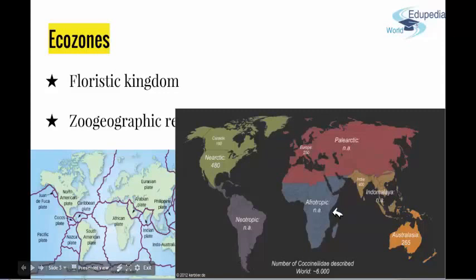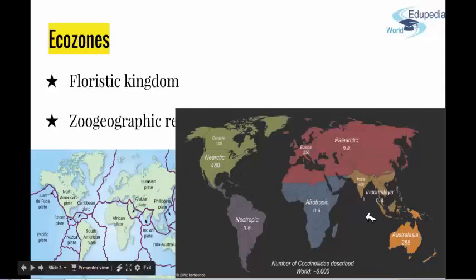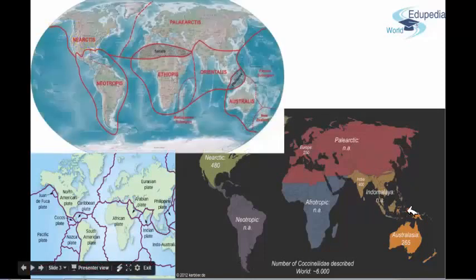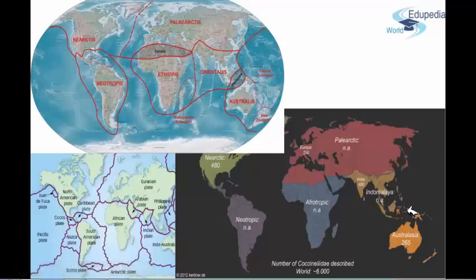Then we have Australasia, which includes Australia, New Zealand, New Guinea, and some other small archipelagos around it. Neotropic covers South America and Central America, taking a bit of Mexico, a tiny part of North America, and the archipelago including Cuba and the rest. Indomalaya includes India, Southeast Asia, and China. There is also the Antarctic region, including Antarctica, which is not on this picture, as well as Oceania, including Polynesia (except New Zealand), Micronesia, and the Fiji Islands, which are also not on this picture.